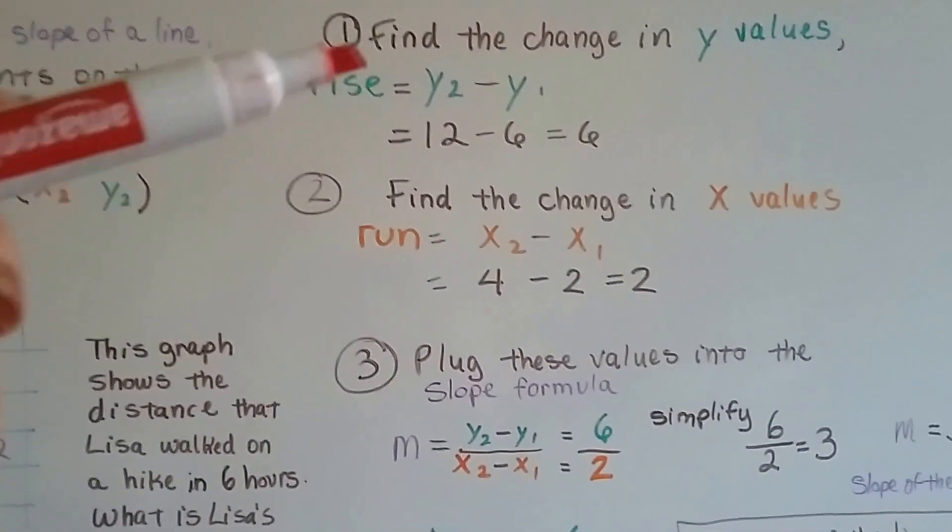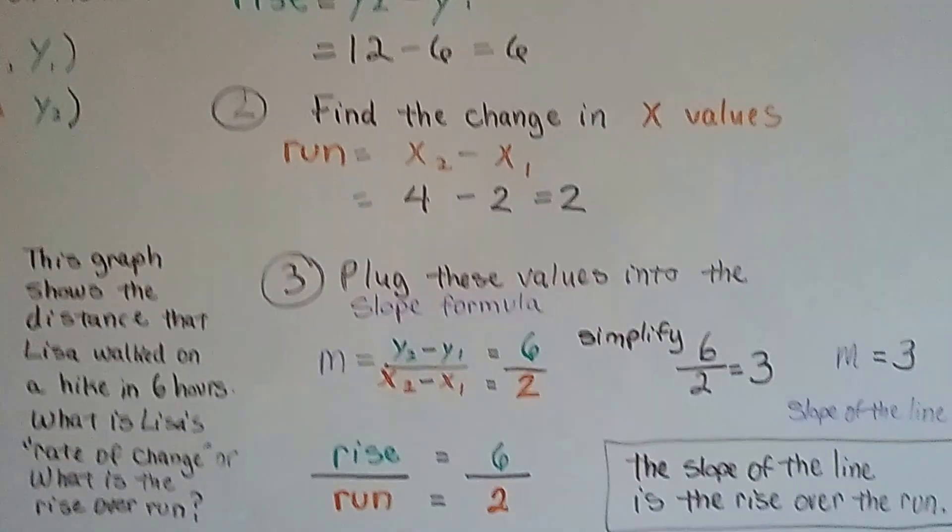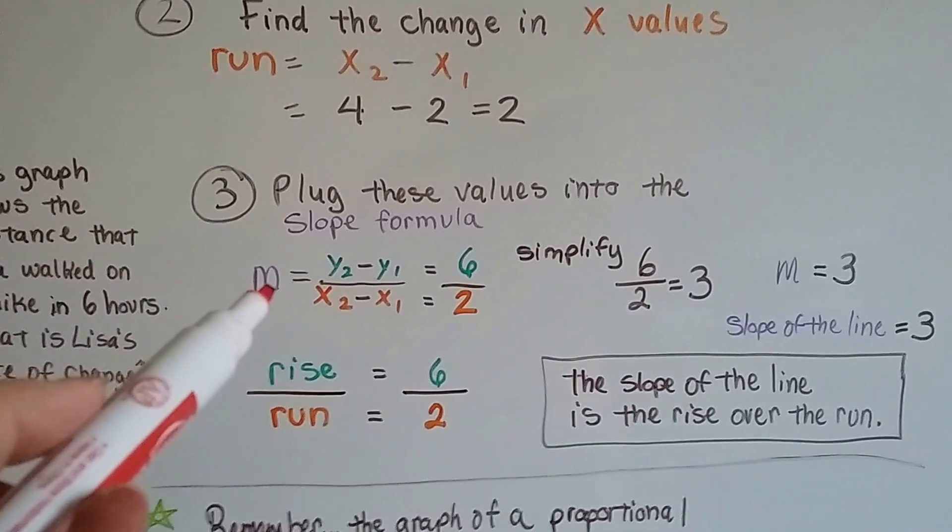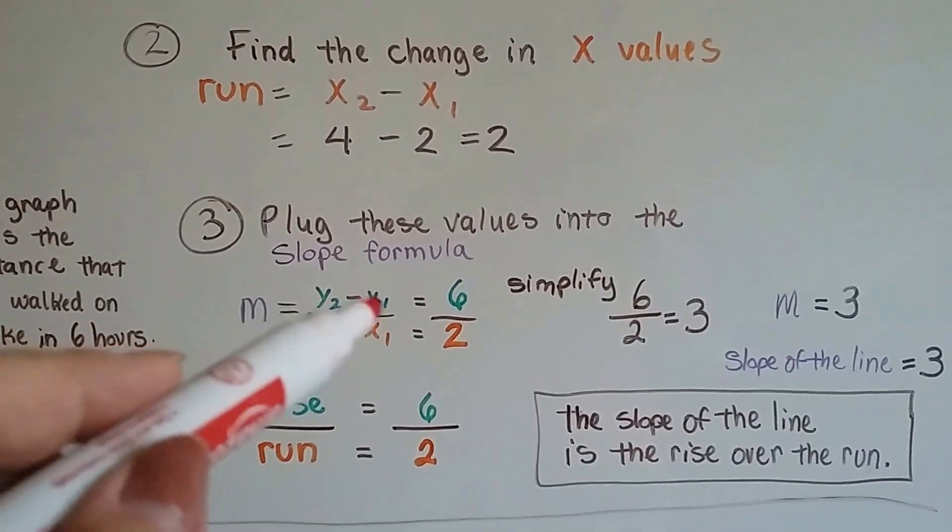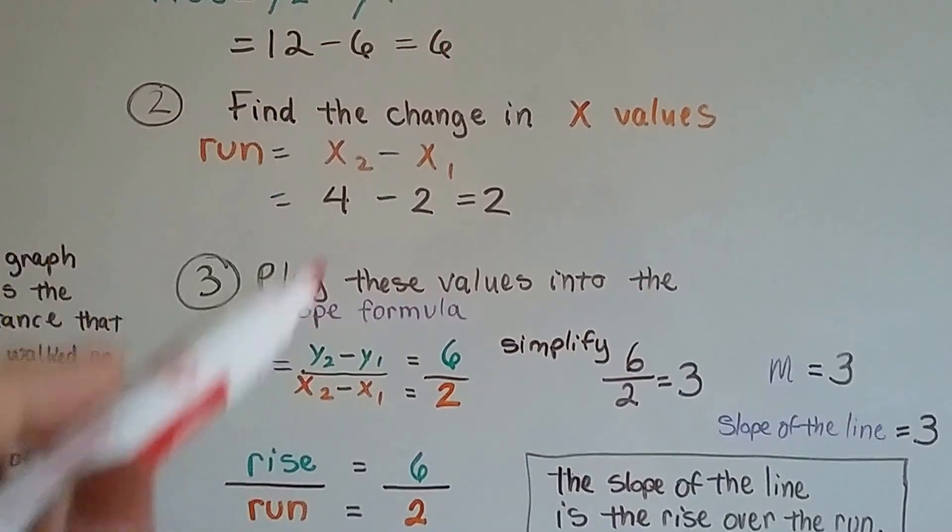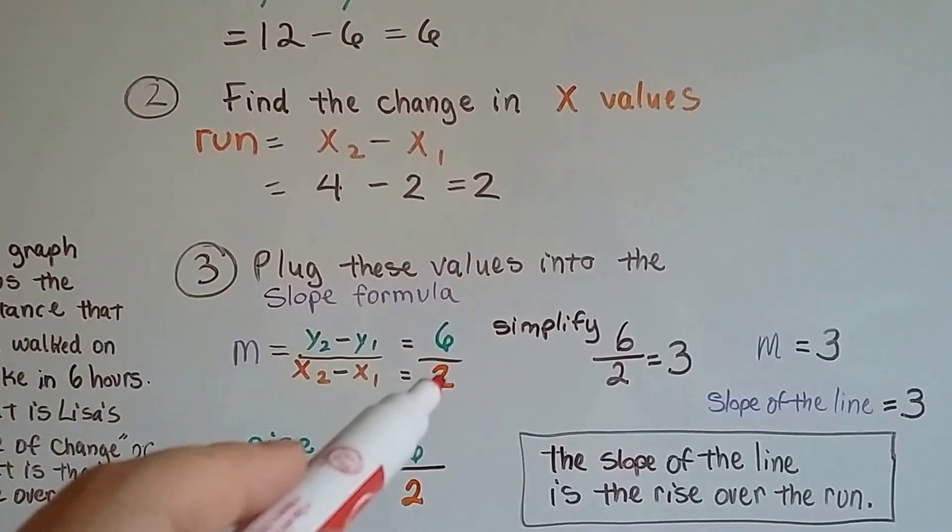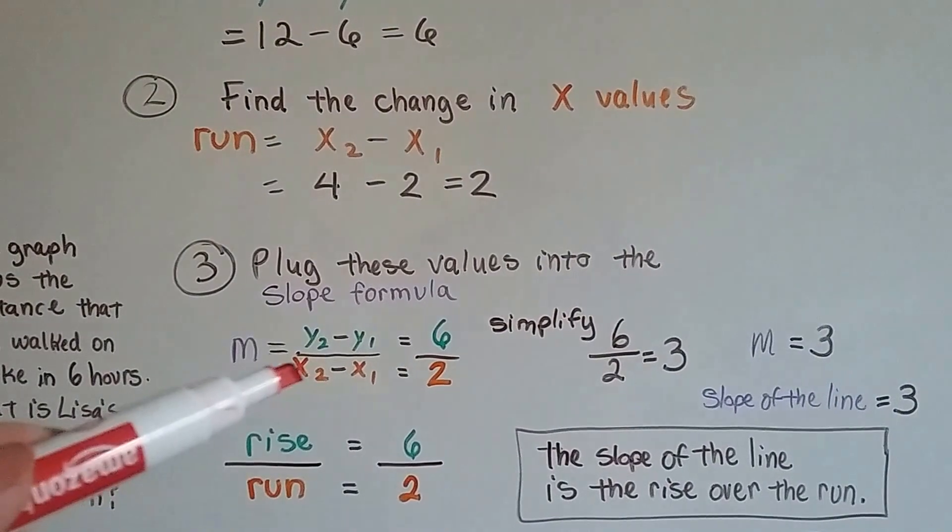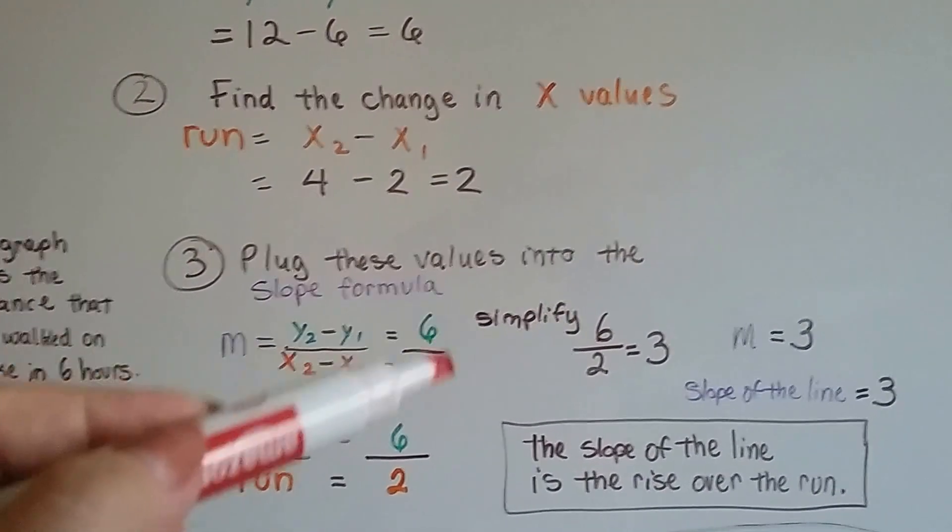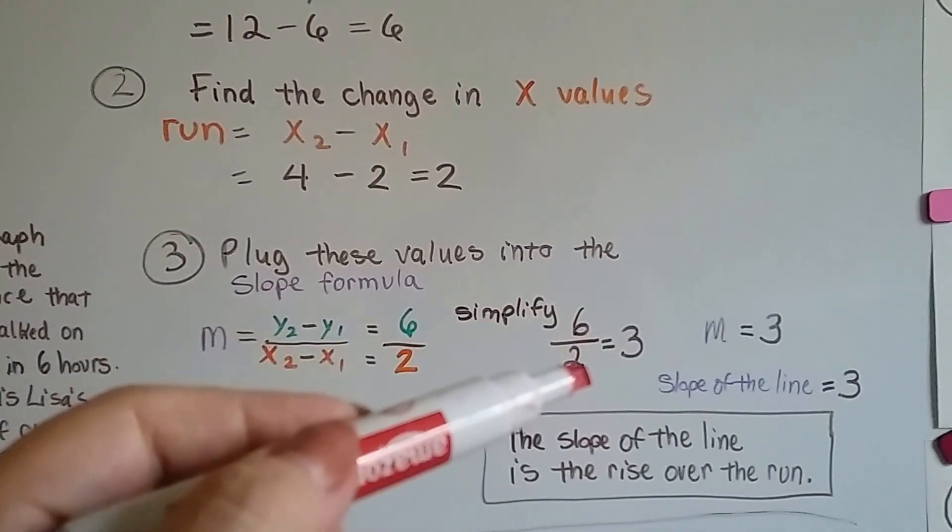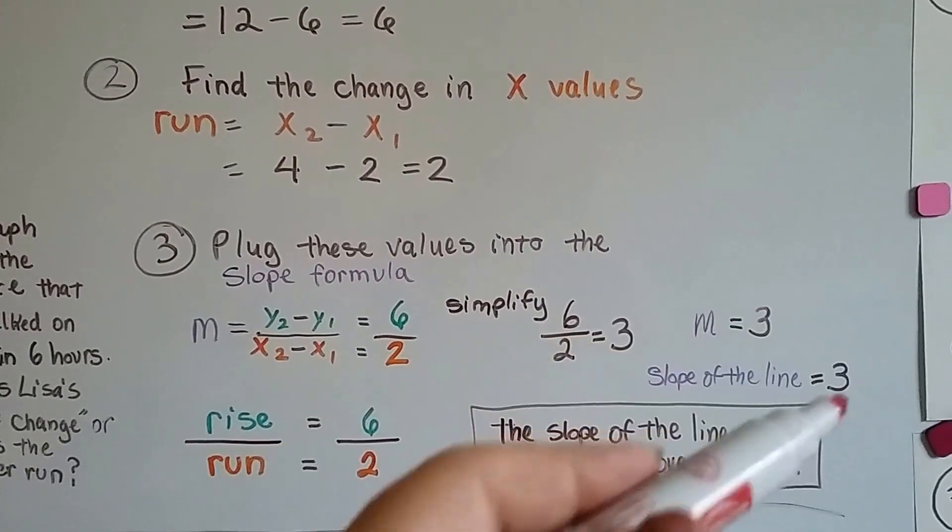Now all we have to do is put the rise over the run, the 6 over the 2. We plug these values into the slope formula, that the slope of the line is equal to y2 minus y1, that was the 6, over x2 minus x1, that was the 2. So the slope formula says the slope of the line is 6 over 2. We simplify 6 over 2 as 3. Because 2 goes into 6 three times, we know the slope of the line is 3.